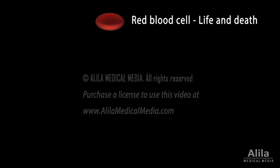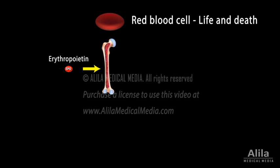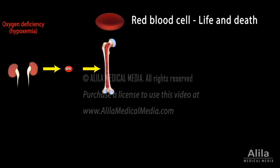Production of red blood cells occurs in the red bone marrow and is stimulated by erythropoietin, EPO. EPO is secreted predominantly by the kidneys. The kidneys sense oxygen levels in the blood and adjust EPO secretion accordingly to the body's needs.